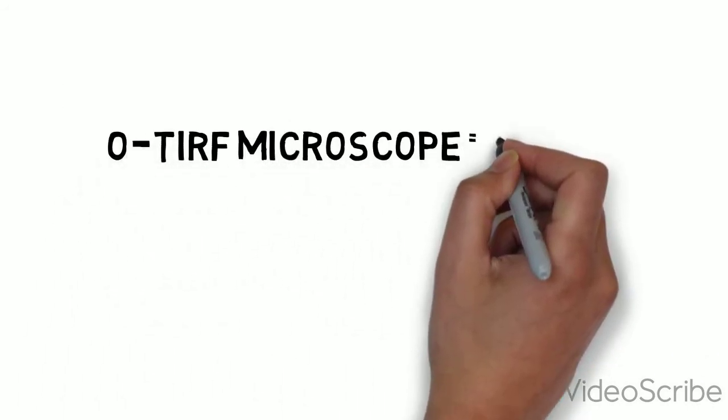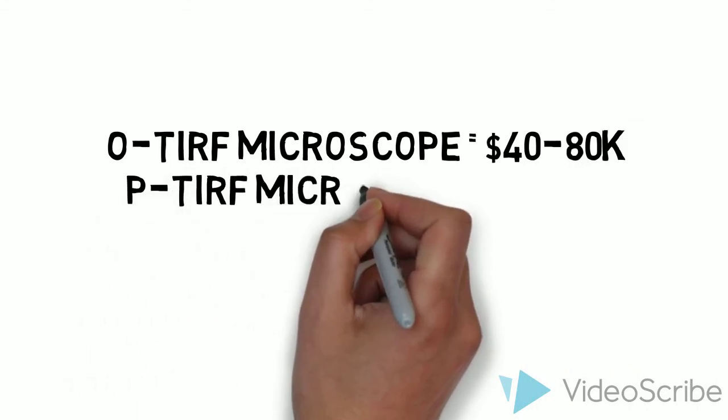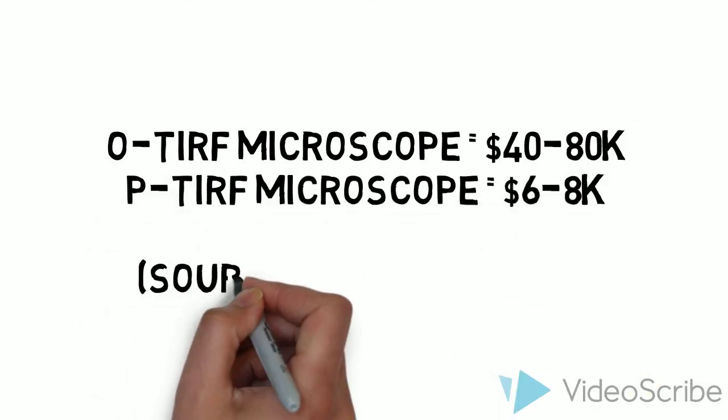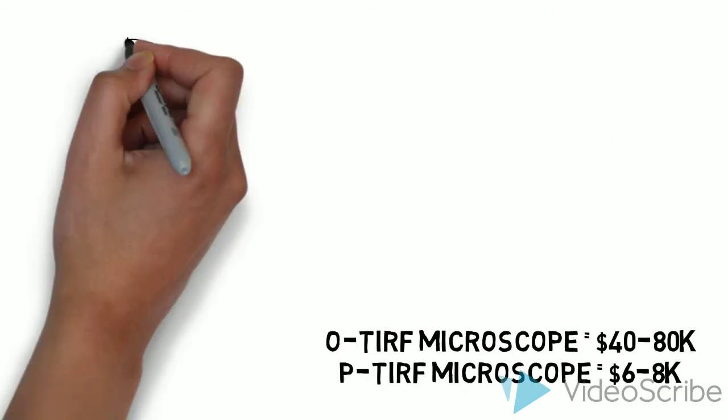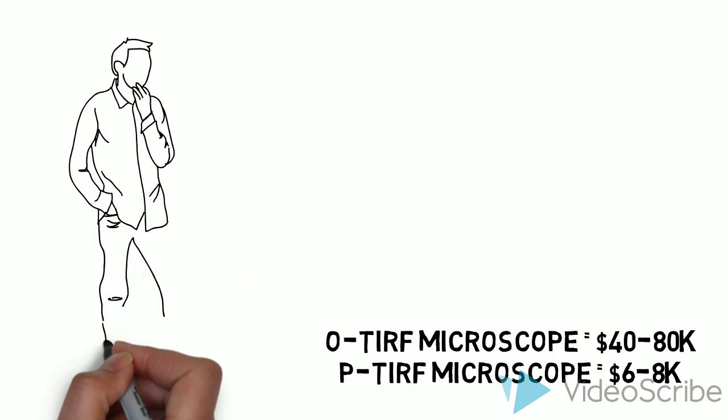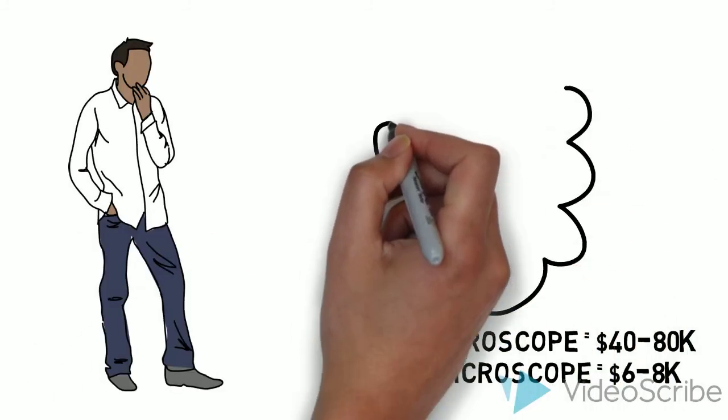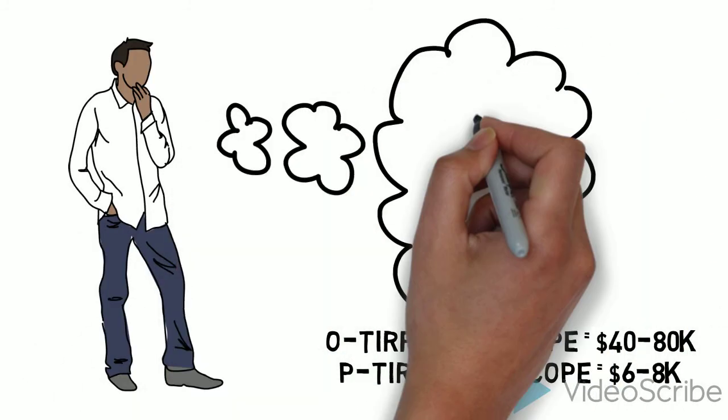Interestingly enough, P-TIRF microscopes were commercially unavailable and had to be self-constructed in research labs until quite recently. Many argue that the commercialized microscope companies aiming to make money preferred to offer O-TIRF setups because they would require the purchase of the pricier objective lenses.